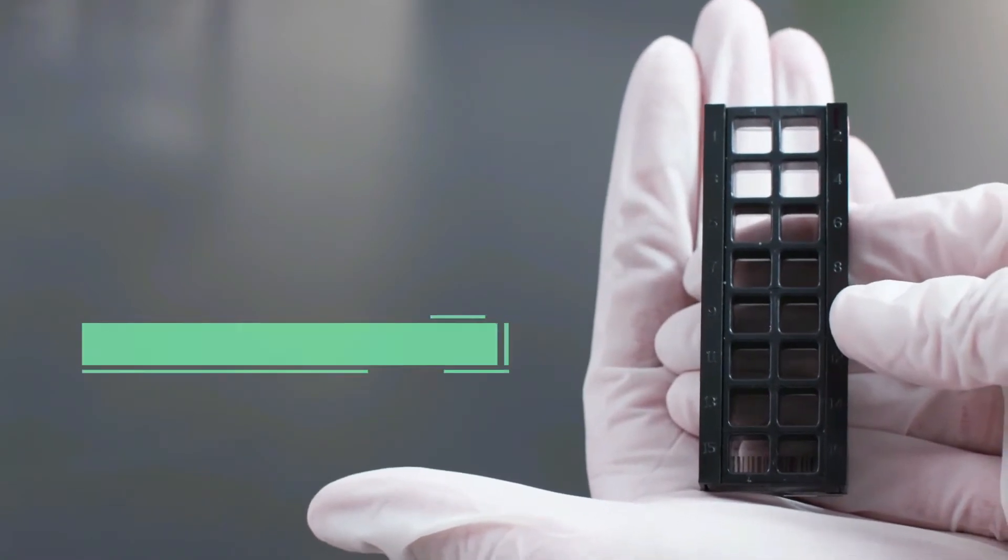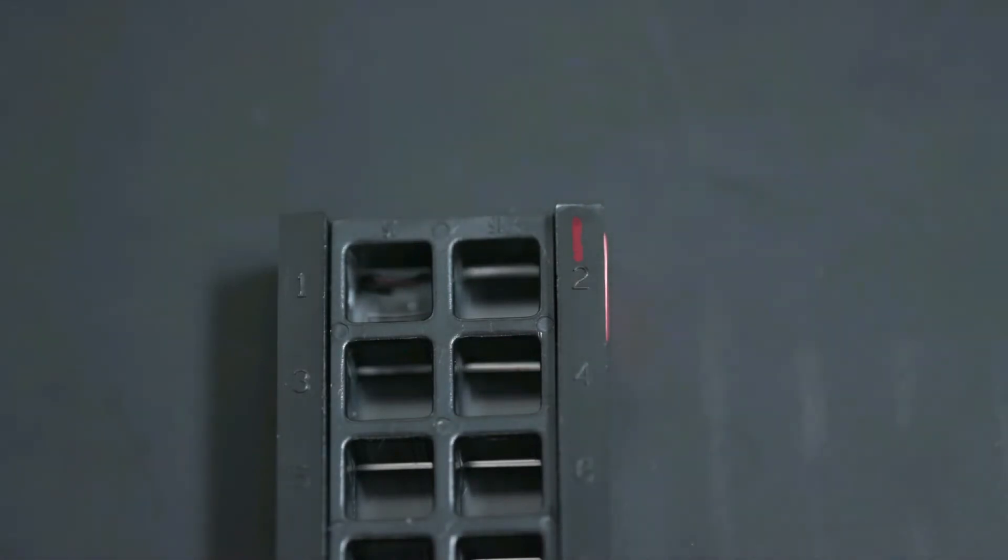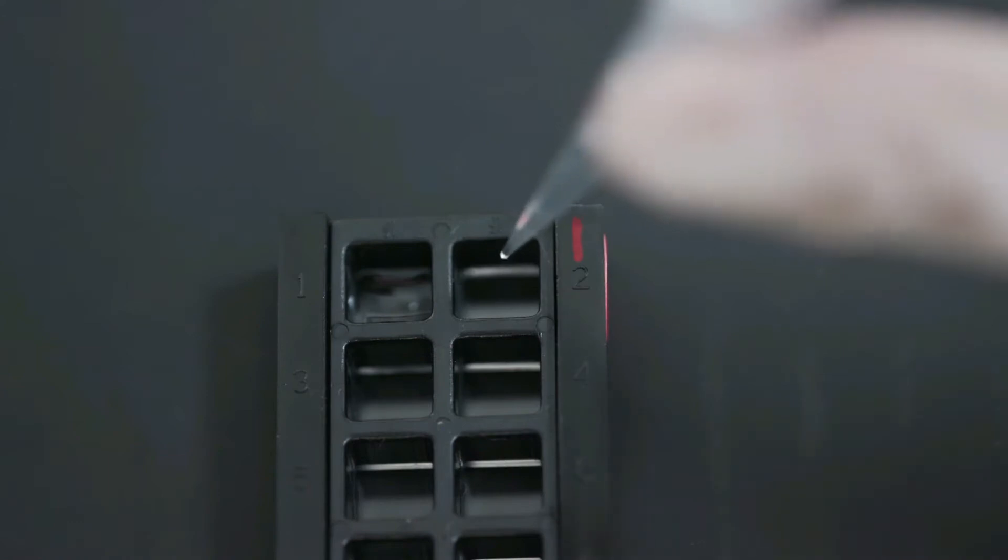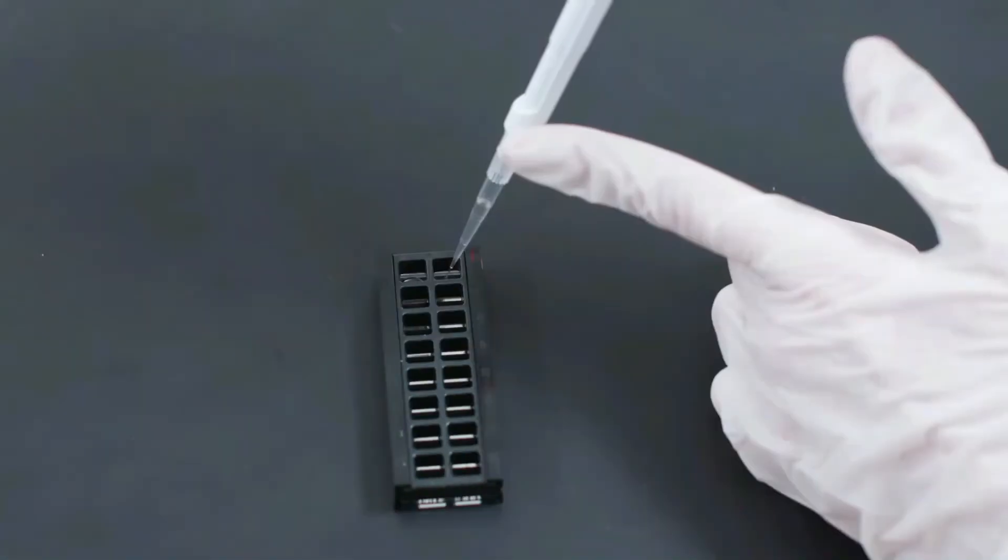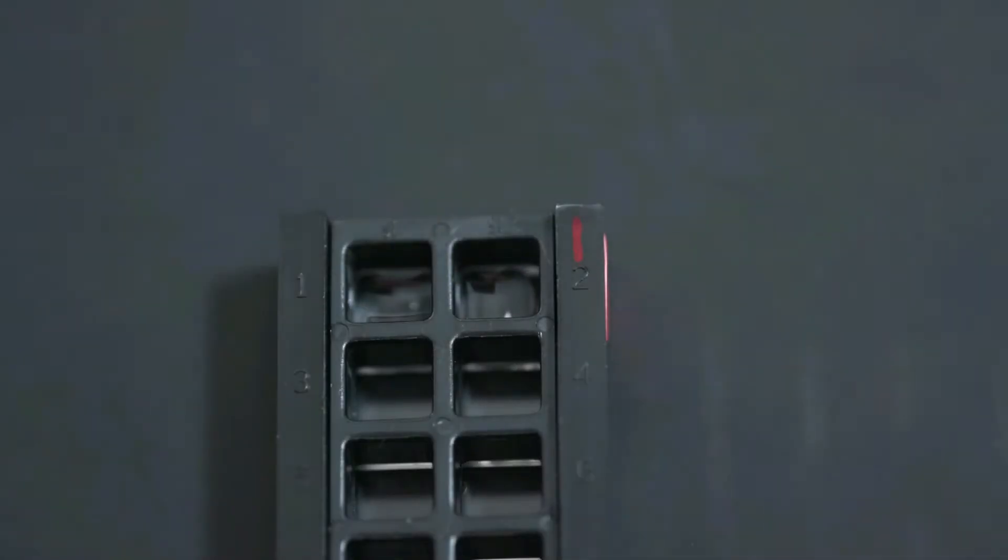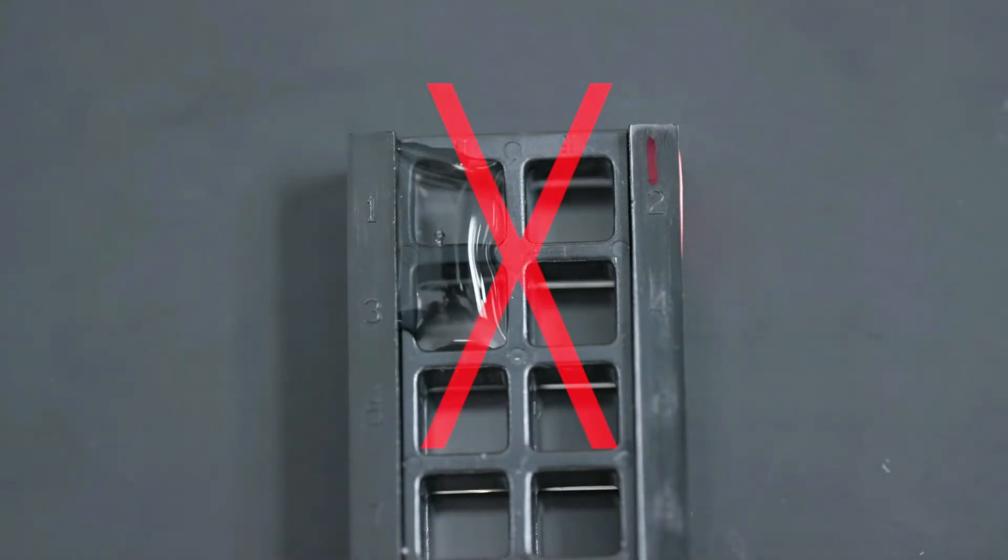When you're ready to begin the experiment, be sure to orient the slide and record which sample or standard is being added to which well. Check your manual for suggested configuration of standards. To avoid smearing the array spots, pipette slowly, and never touch the pipette tip to the glass. Be sure the liquid fully covers the array surface with no air bubbles. Take care not to overfill the wells. This will not happen if you added the recommended volumes of liquid.